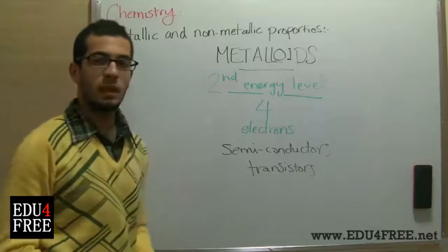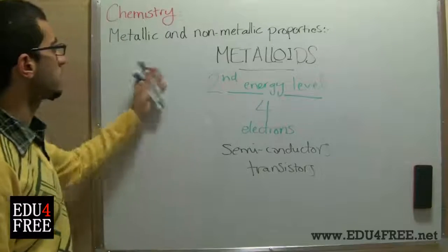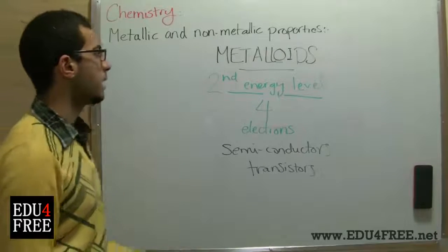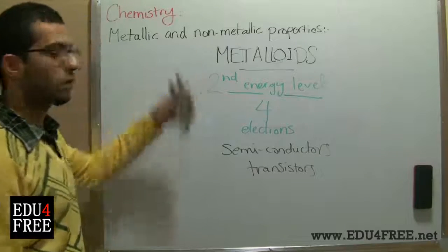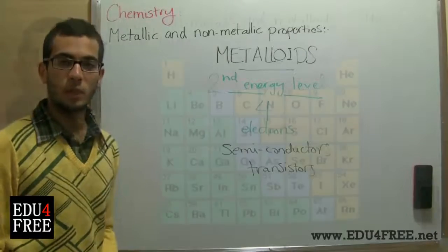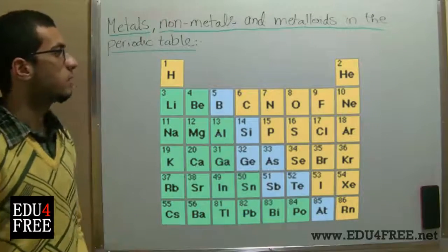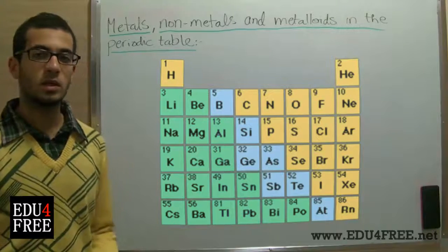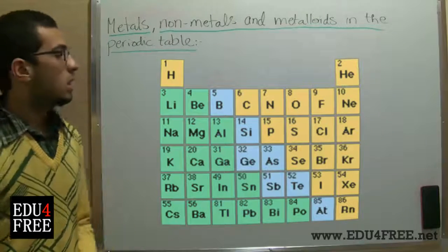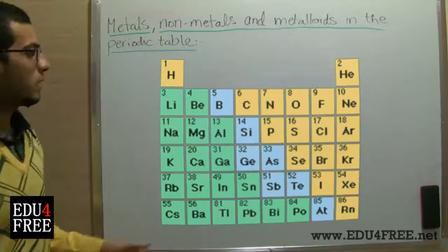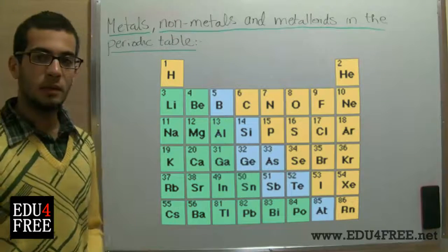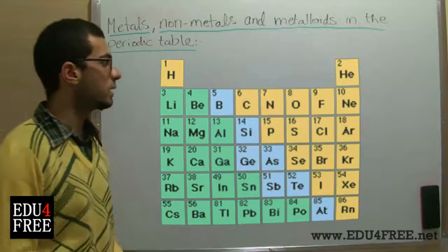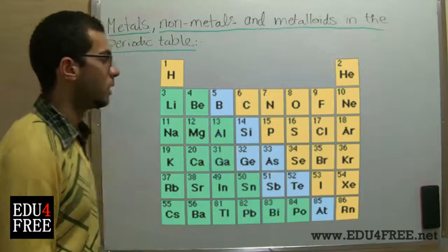Now let's see the position of metals, nonmetals, and metalloids in the periodic table and how we can understand the properties of the three groups from the periodic table. As we can see in this image, these are the metals, nonmetals, and metalloids showing their positions. Metals are found in green, nonmetals in orange, and metalloids in between in pale blue.